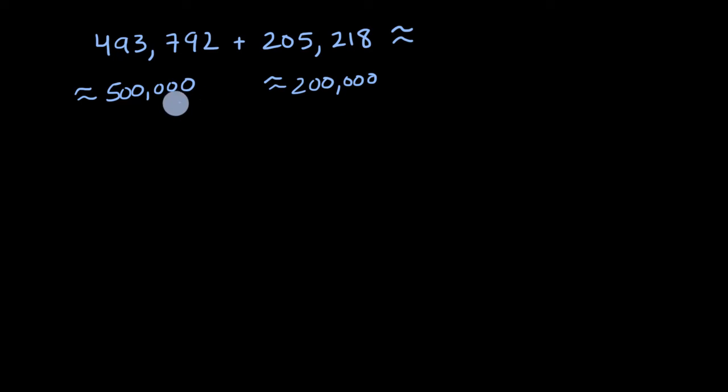And now it's pretty easy to do in my head. 500,000 plus 200,000, well that's 700,000. So this whole thing is approximately equal to 700,000.